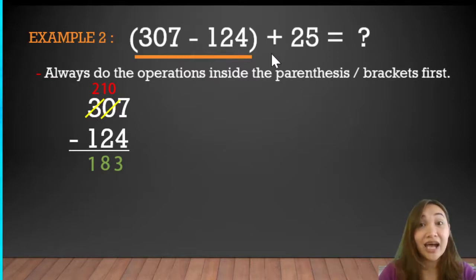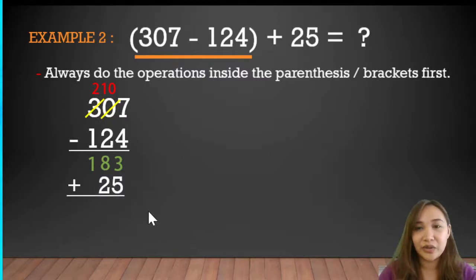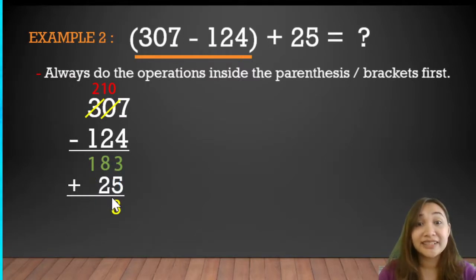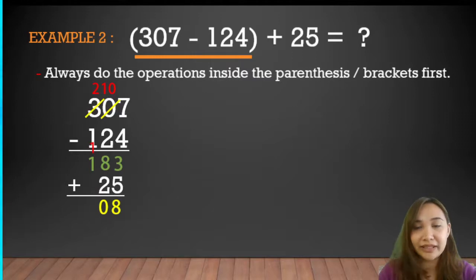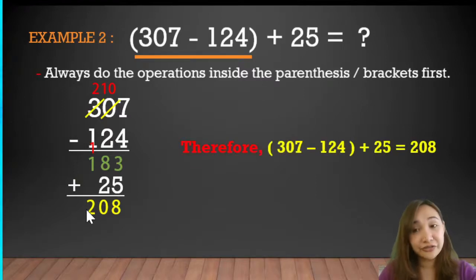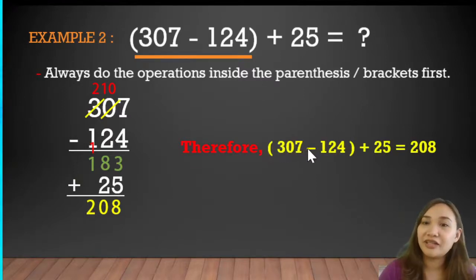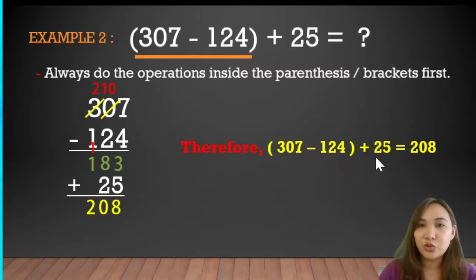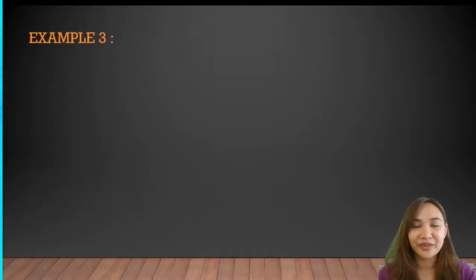Now let's add 25 to 183. Adding the ones: 3 plus 5 equals 8. Adding the tens: 8 plus 2 equals 10 — bring down 0, carry 1 to the hundreds. Hundreds: 1 plus 1 equals 2. So the answer is 208.